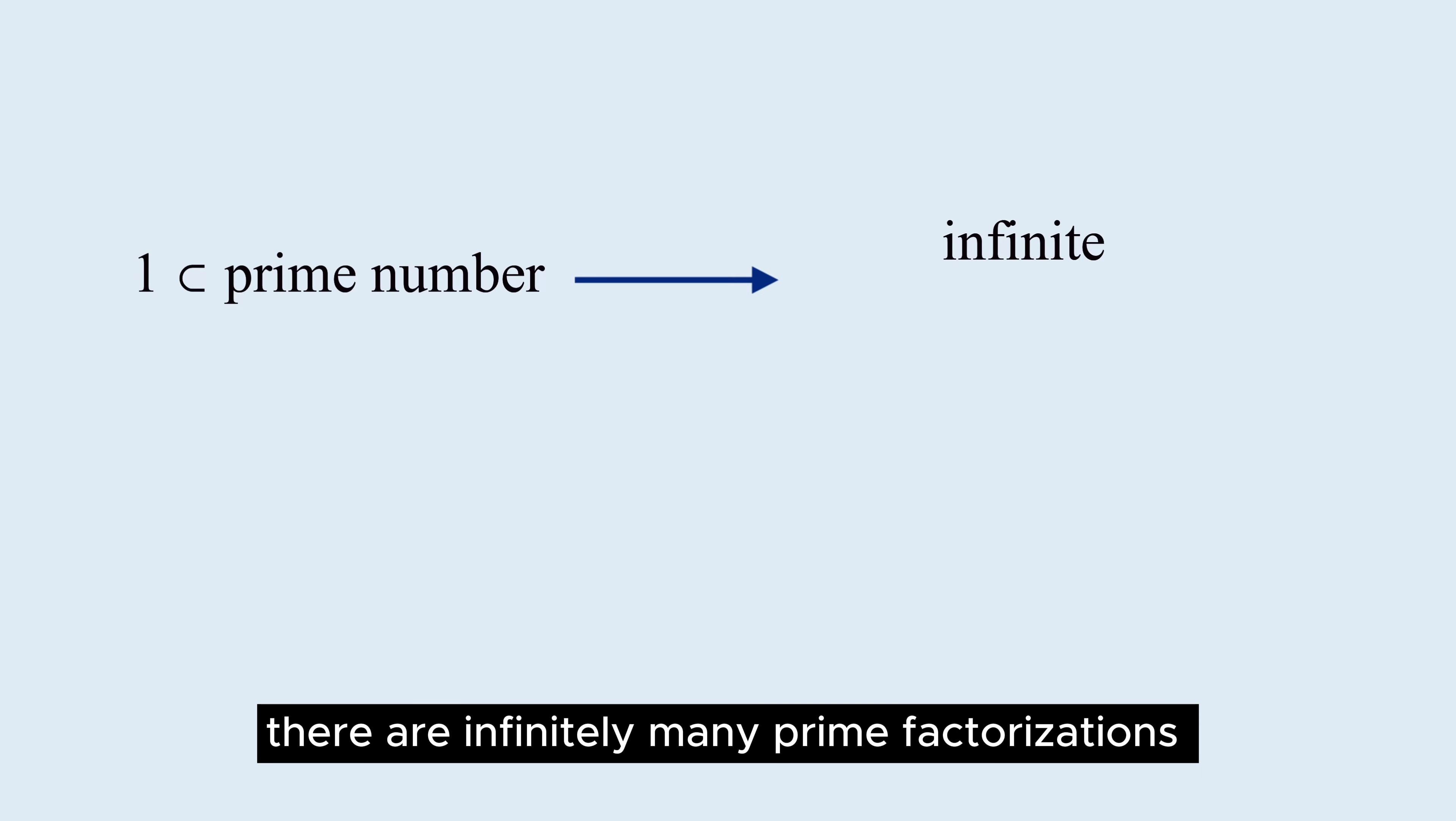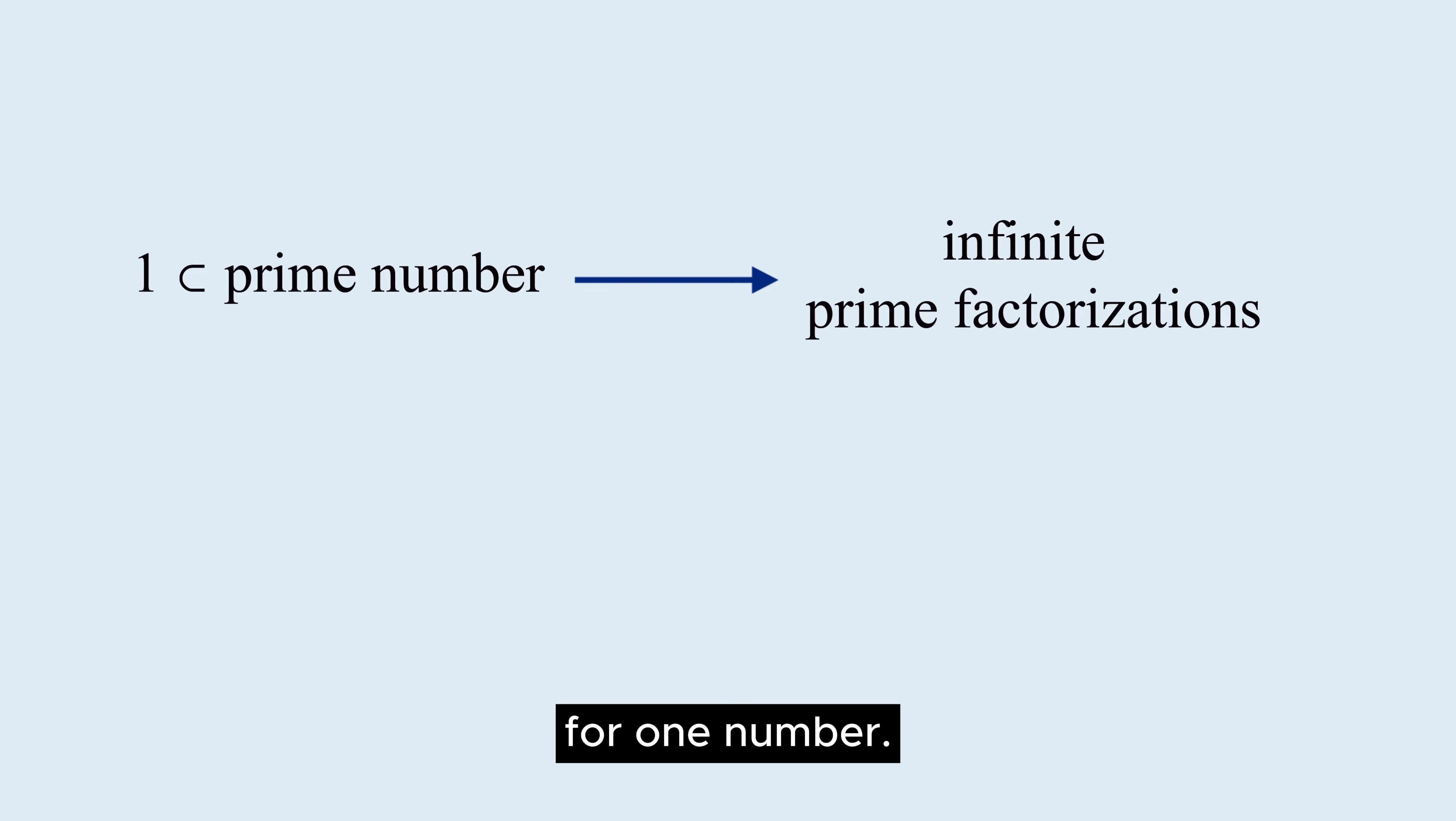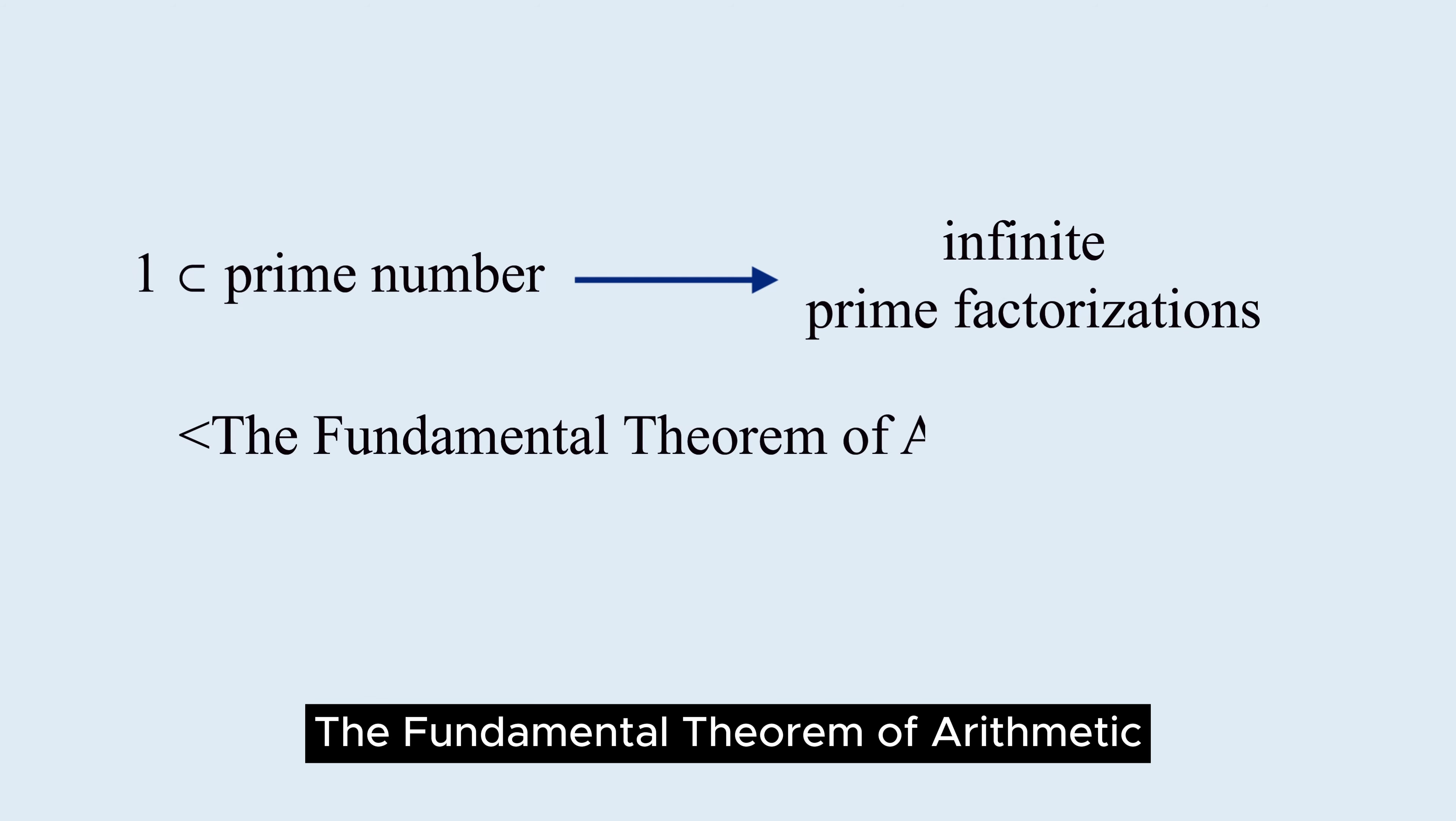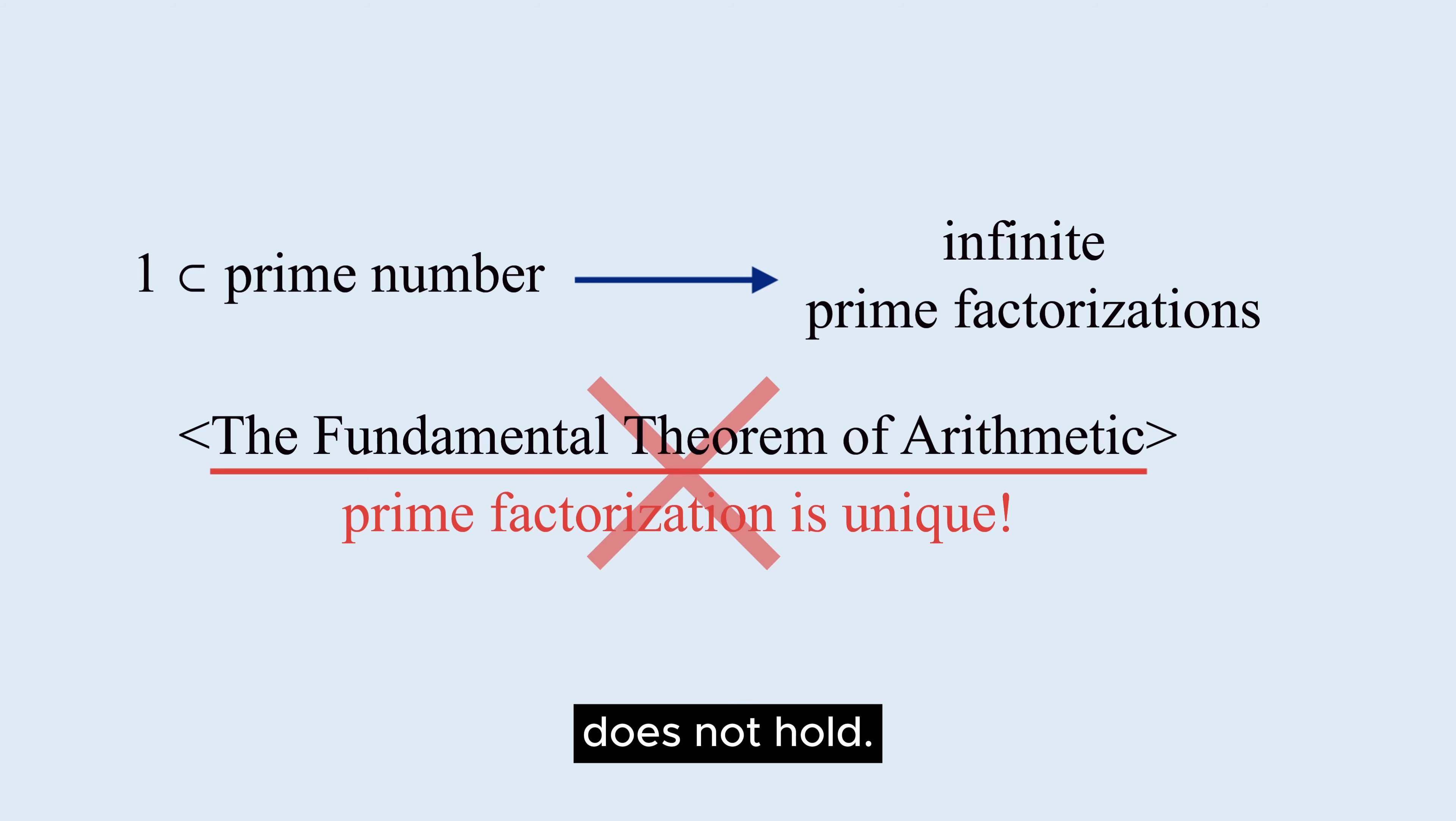If 1 is a prime number, there are infinitely many prime factorizations for one number. The fundamental theorem of arithmetic, which states that the form is unique, does not hold.